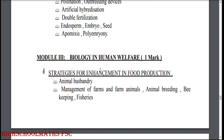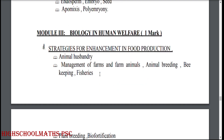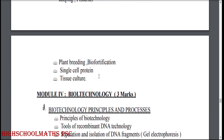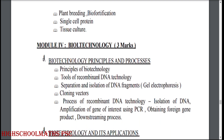Module 3: Biology in human welfare. Strategies for enhancement in food production. Animal husbandry: management of farms and farm animals, animal breeding, beekeeping, fisheries. Plant breeding. Biofortification. Single cell protein. Tissue culture.